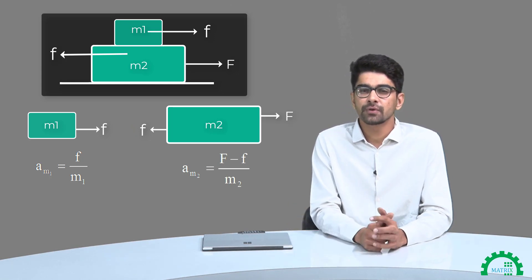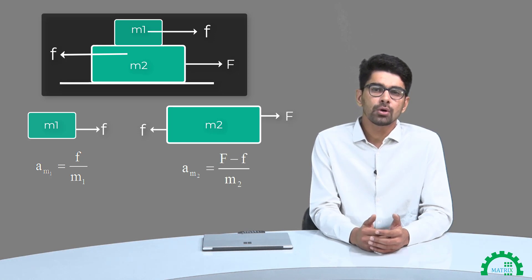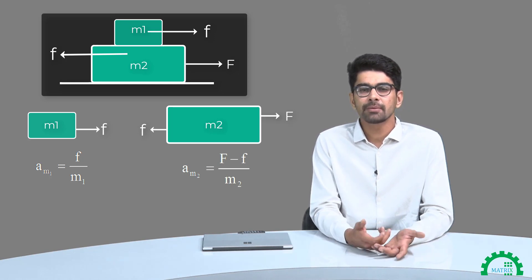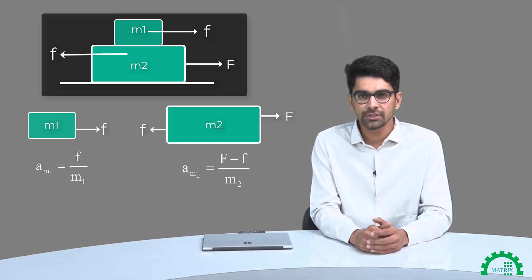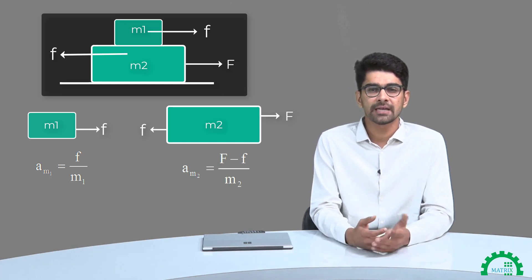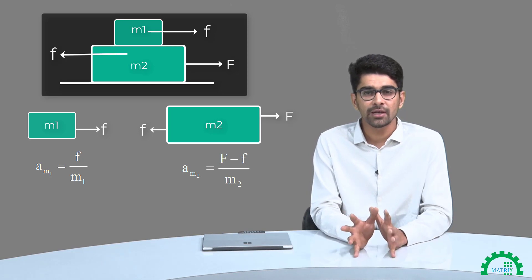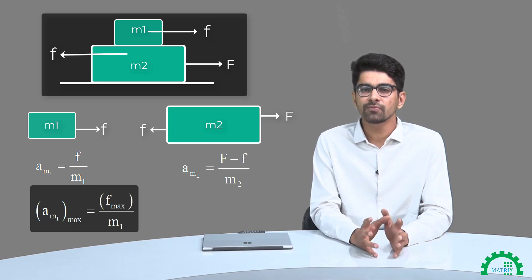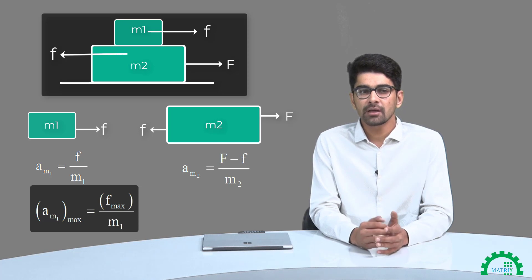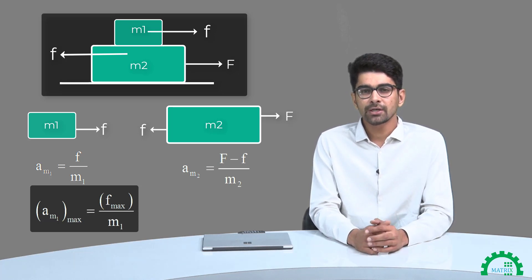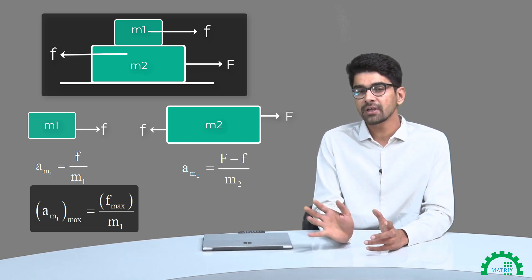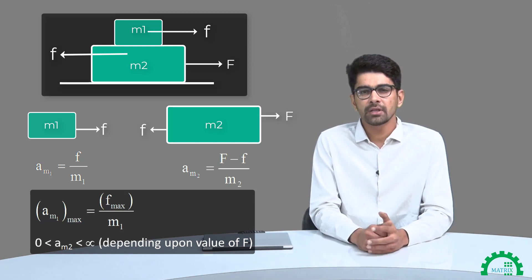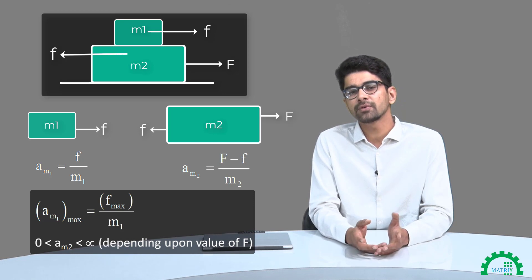So if we increase the value of force F, the value of frictional force will also increase. But if we go beyond a certain value of force, there will be slipping. The reason for slipping is: suppose there's a value of force F at which friction has to put its maximum effort — by maximum effort I mean friction has to take its limiting value to prevent slipping. So the acceleration of M1 will be maximum in that case, because on M1 we only have frictional force. So the acceleration of M1 will increase up to a certain limit, but on M2 we have our applied force and we can increase that till infinity, so the acceleration of M2 will keep increasing.